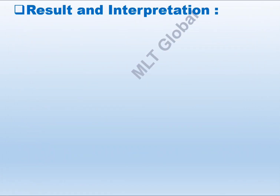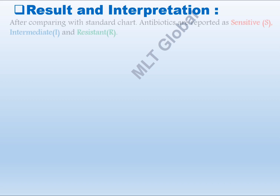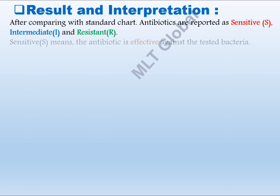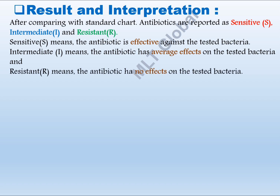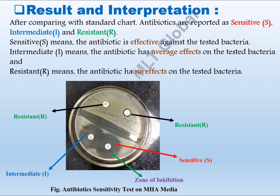Result and Interpretation: After comparing with the standard chart, antibiotics are reported as Sensitive (S), Intermediate (I), or Resistant (R). Sensitive (S) means the antibiotic is effective against the tested bacteria. Intermediate (I) means the antibiotic has average effects on the tested bacteria. Resistant (R) means the antibiotic has no effects on the tested bacteria.